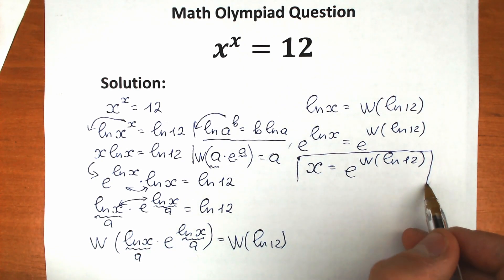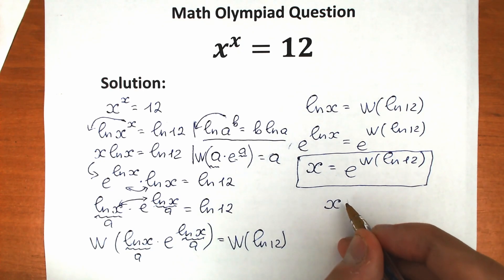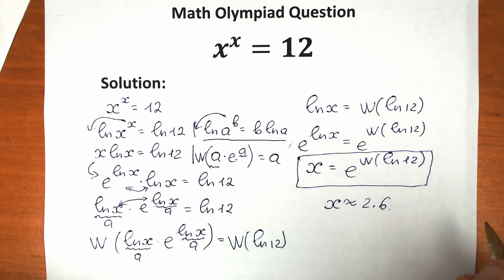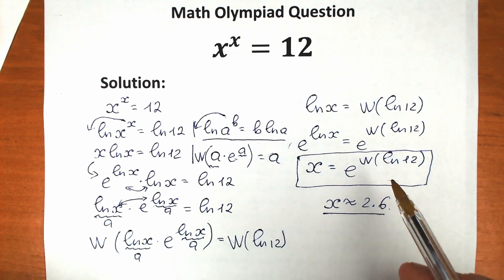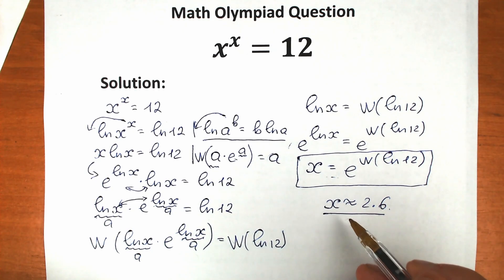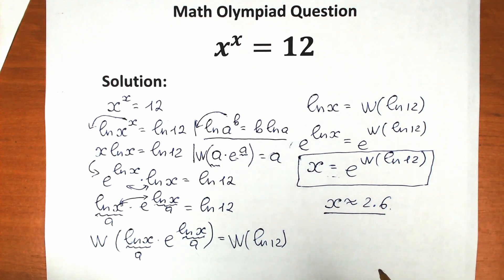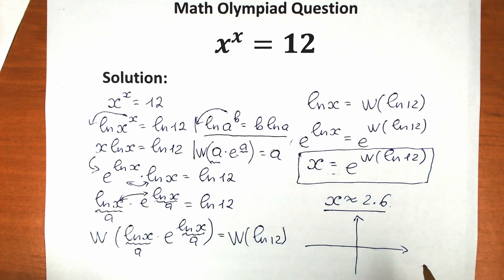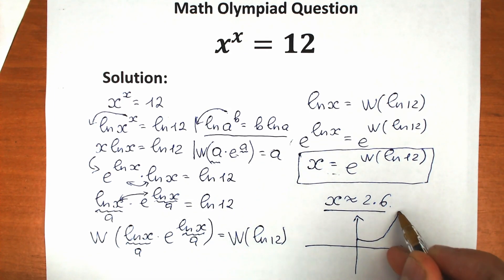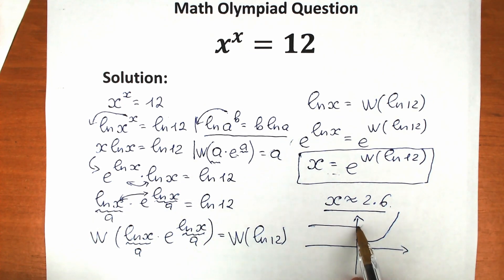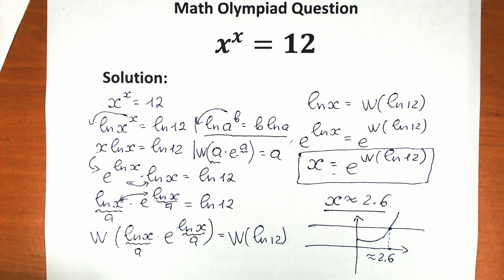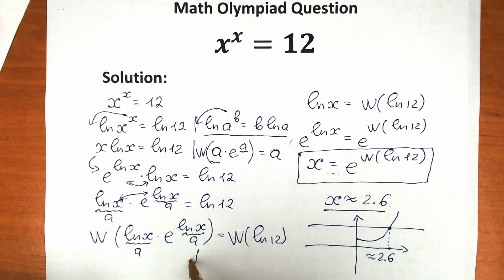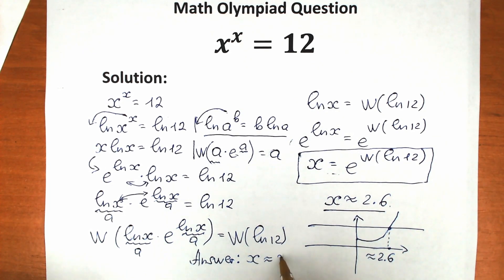You can find the exact numerical value using online resources. The answer is approximately x ≈ 2.6. Looking at the graph, the curve for x^x intersects the horizontal line y = 12 at exactly one point, confirming there is only one solution, at approximately x = 2.6.